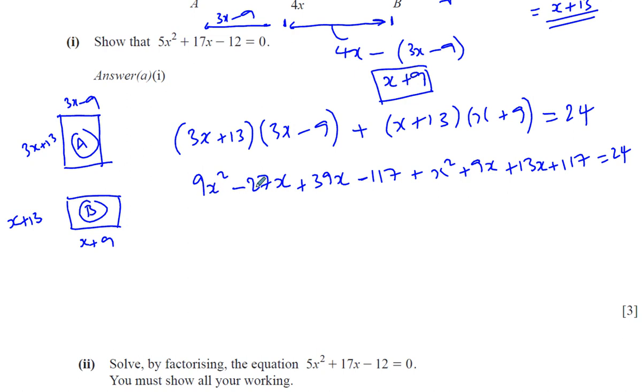Let's try to tidy this up. You've got 9x squared plus 1x squared which is 10x squared. Then you've got minus 27x plus 39x plus 9x plus 13x. So 39 minus 27 is 12, 12 plus 13 is 25, 25 plus 9 is 34, so we have plus 34x. And then you've got minus 117 plus 117 which is 0. Now we want to have everything on one side, so you've got 10x squared plus 34x minus 24 equals 0.